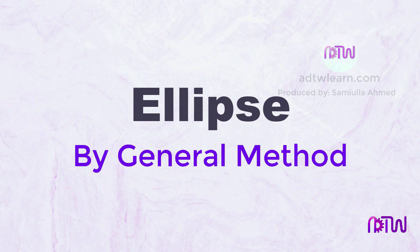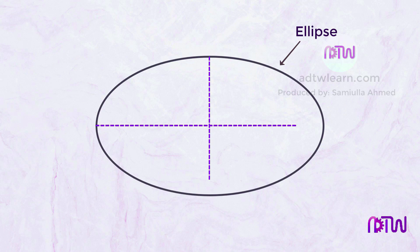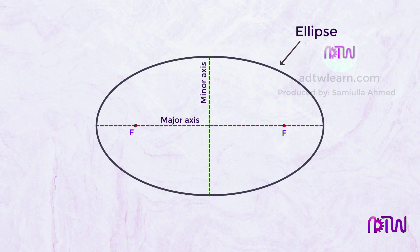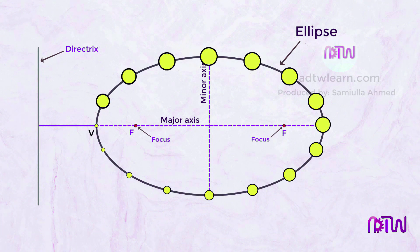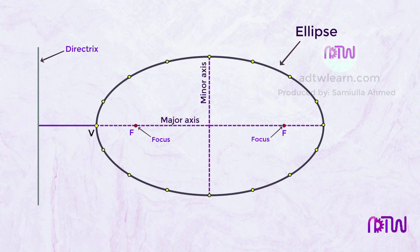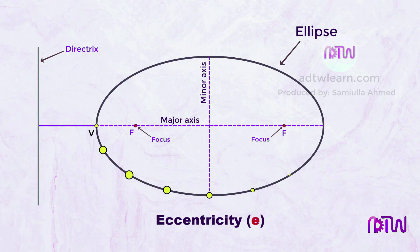In this video we will see how to draw an ellipse by the eccentricity method. An ellipse is an oval shape with two axes — the major and minor axis. It has fixed points on the axis called the focus, a perpendicular line to the axis called the directrix, and a point on the curve at the axis named V. Each point on the curve is at a specific distance given by eccentricity. The intersection point of the axis and directrix is named C.